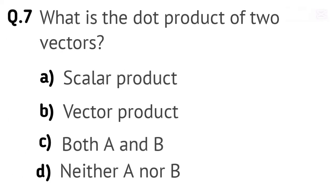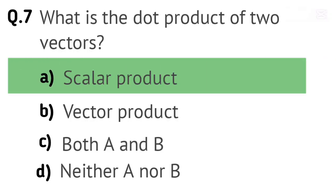Question 7. What is the dot product of two vectors? Options: A. Scalar product. B. Vector product. C. Both A and B. D. Neither A nor B. Right answer is A. Scalar product.